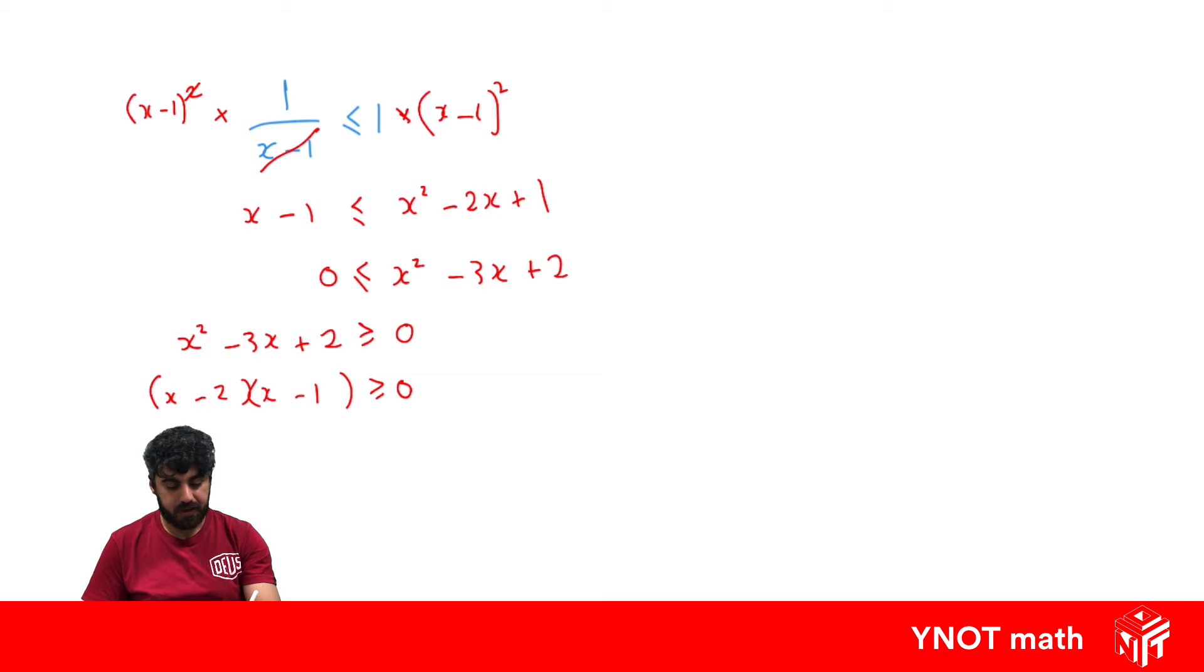So we can go ahead and graph this. So we know the x-intercepts are at 1 and 2, and our y-intercept is just at minus 2 times minus 1, which is at 2. So we can go ahead and graph this.